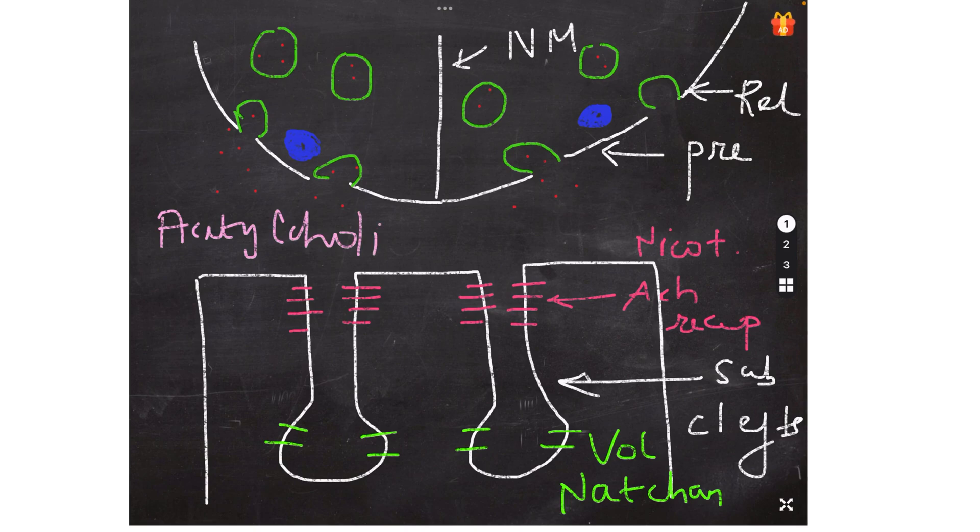So now when we are studying neuromuscular transmission, what we have to study is, first is the pre-synaptic events, that is what happens before the acetylcholine is released. Then we have the synaptic events. And in the end we have the post-synaptic events.